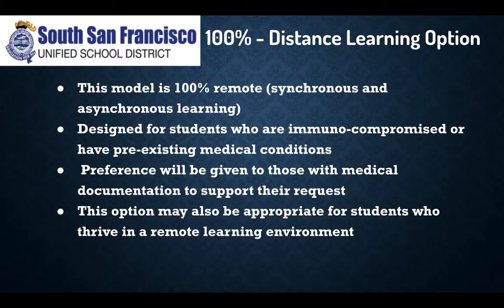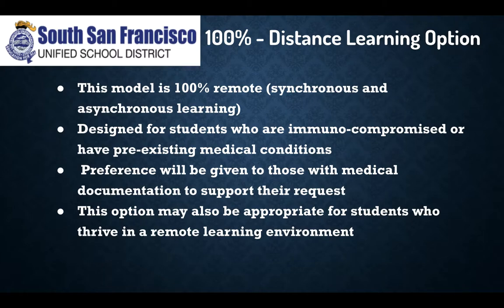For families considering the 100% distance learning option, this model is 100% remote — there is no in-person support and everything will be conducted virtually. It is designed for students that are immunocompromised or have a pre-existing medical condition, and we'll give preference to those students that have medical documentation to support the request. If there's space available, families who want the remote learning environment will also be considered.